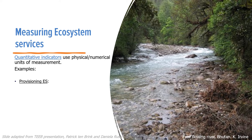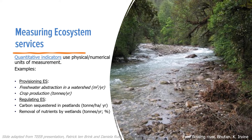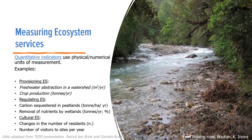Quantitative indicators use physical numerical units of measurements. For provisioning services, freshwater abstraction in a watershed measured by cubic meters per year is an example, and another is crop production in tons per year. For regulating services, examples include carbon sequestered in peatlands with metric unit as tonnes per hectare per year, and removal of nutrients by wetlands measured in tonnes per year or percentage. For cultural services, examples of units of measurement include changes in the number of residents as well as number of visitors to a site per year.